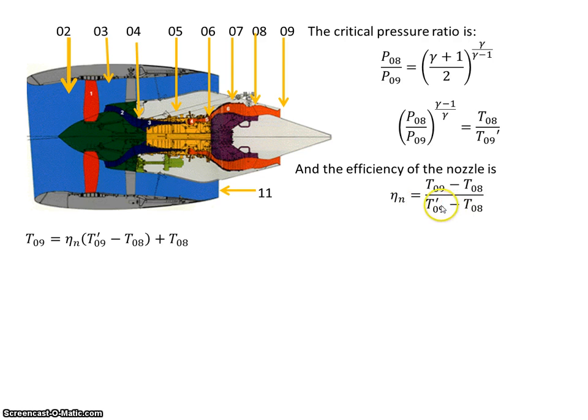I'm going to cross multiply by T9 ideal minus T8 and then bring the T8 across to give me that. So now I have a value for T9.